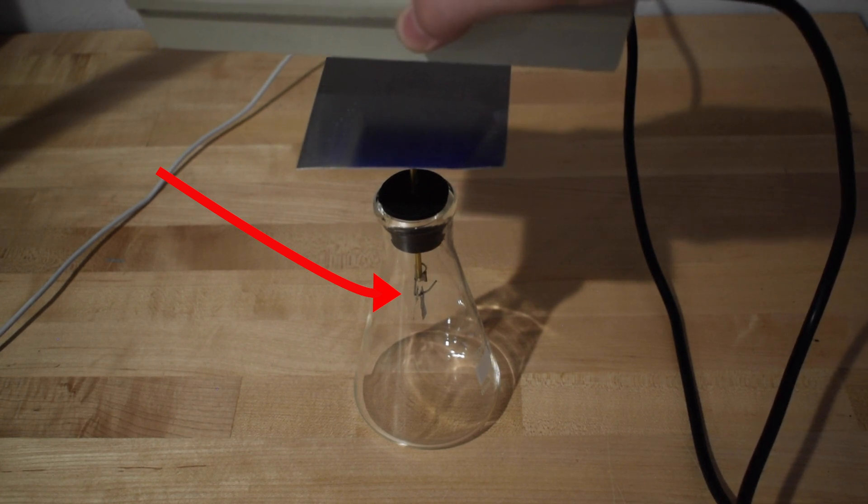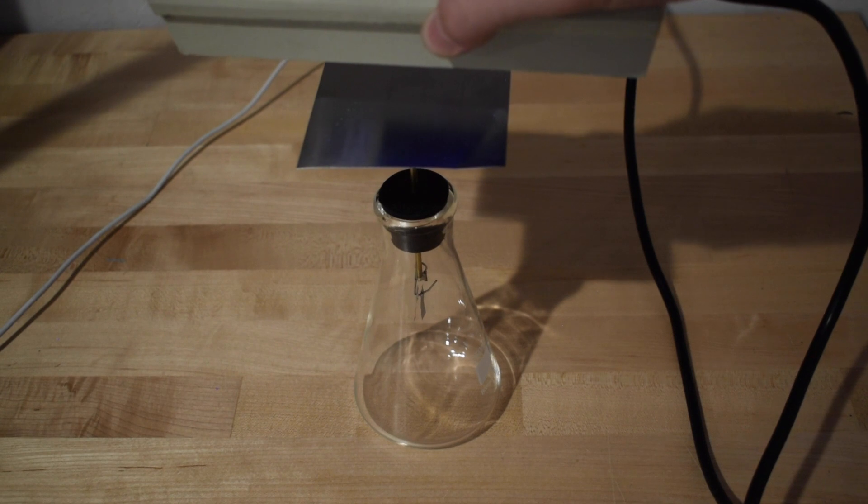As you can see, the foil pieces begin returning to each other, which means the electrons have been ejected from the surface and we have just witnessed the photoelectric effect.